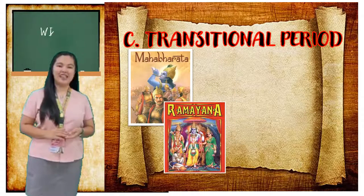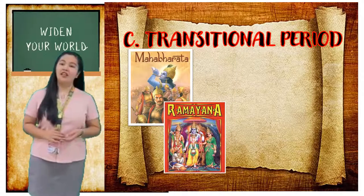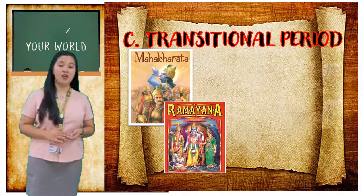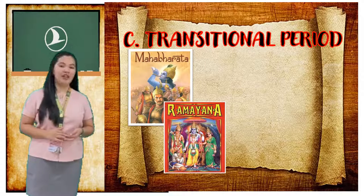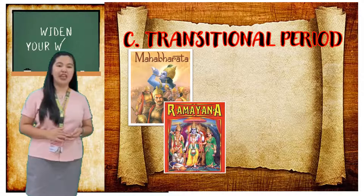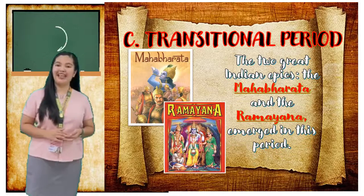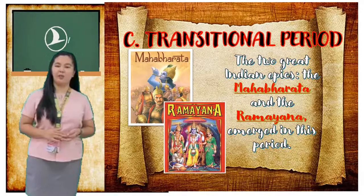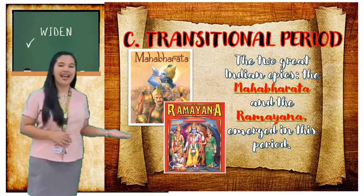Next, we have the transitional period, also known as Islamic Ascendancy. This was the period of evolution from Buddhism into Hinduism or Brahmanism. The two great Indian epics that emerged in this period were the Mahabharata and the Ramayana.